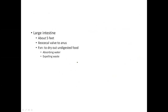The large intestine is about five feet in length, going from the ileocecal valve to the anus. Its job is to absorb water and then expel waste. If your body loses the ability to absorb water, you get diarrhea. Different infections like cryptosporidium can cause this, and if prolonged, diarrhea can lead to dehydration and serious problems.